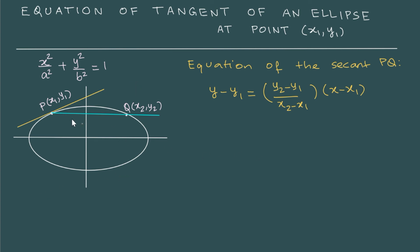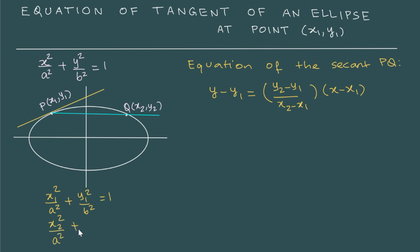Since both points are on the ellipse, they must satisfy the equation. So we can write that x1 squared by a squared plus y1 squared by b squared equals 1. And similarly, x2 squared by a squared plus y2 squared by b squared is also 1.